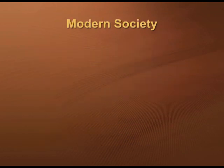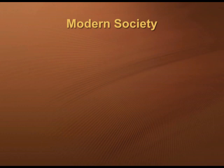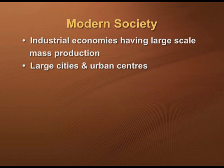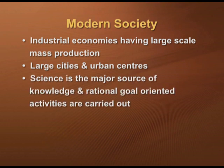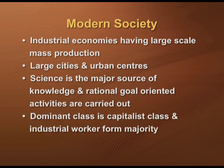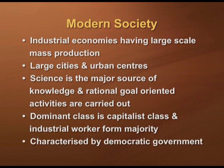On the contrary, modern societies are industrial economies having large scale mass production. They have large cities and urban centers. Here, science is the major source of knowledge and rational, goal-oriented activities are carried out. The dominant class is the capitalist class and industrial workers form the majority class. These societies are characterized by a democratic form of government.